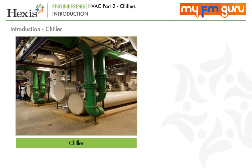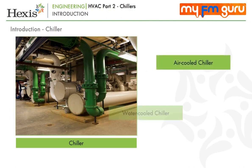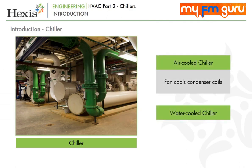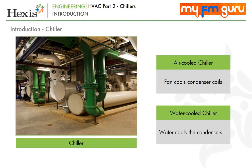Chillers can be broadly classified into two types by the manner in which the condenser is cooled: air-cooled or water-cooled. In air-cooled chillers, the condenser coils are cooled by a fan using ambient air. Water-cooled chillers use water to cool the condensers, and the cooling water in turn loses the heat gained to the ambient using external equipment such as an outdoor cooling tower.